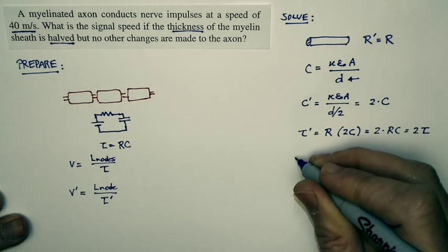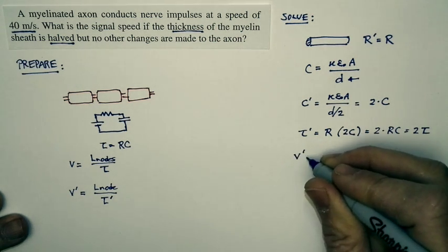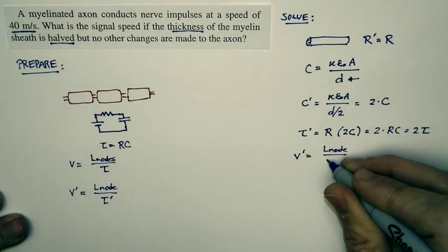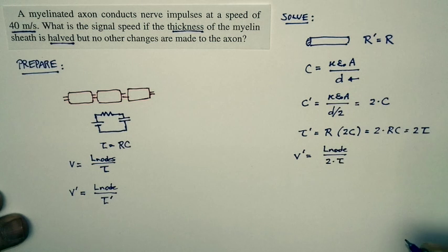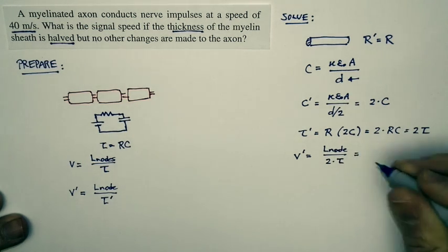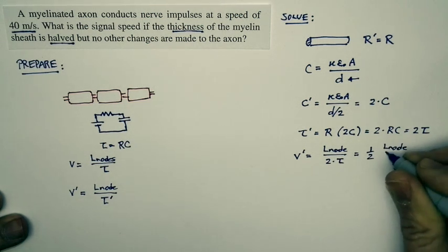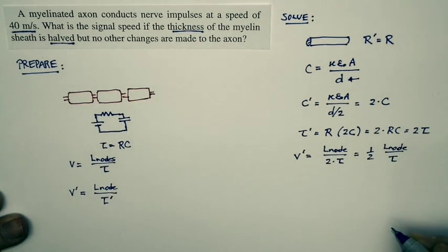Well, that lets us calculate the new speed. The new speed is equal to the distance divided by our new time constant, which is 2 times the previous time constant. And so our new speed is just one half the original speed, the distance between successive nodes divided by the time constant.